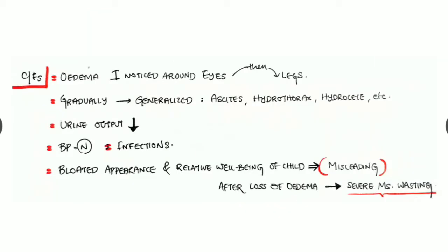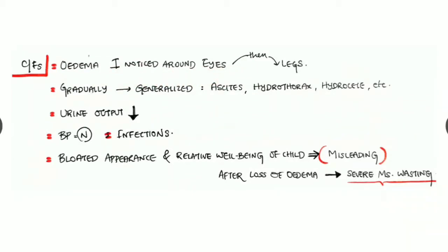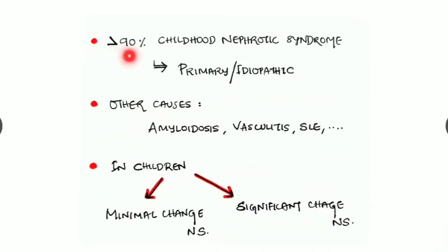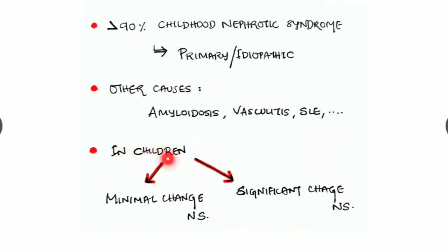Clinical features include edema, noticed initially around the eyes, then in the legs, gradually becoming generalized with ascites, hydrothorax, hydrocele, etc. Urine output is reduced. Blood pressure is normal but infection risk is higher. The child has a bloated appearance with relative well-being, which is misleading — after loss of edema, severe muscle wasting is noticed. More than 90% of childhood nephrotic syndrome is primary or idiopathic; other causes include amyloidosis, vasculitis, and SLE.